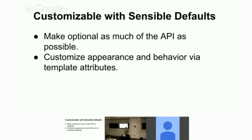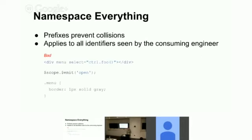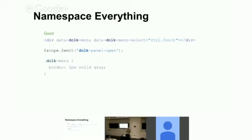Customize appearance and behavior via template attributes. Namespace everything — prefixes prevent collisions, and this applies to all identifiers seen by the consuming engineer. Here's a very bad example: a directive called 'menu' that emits an event called 'open' and has a CSS class called 'menu' — these things are all going to collide with other things. A much better approach is to prefix everything with the name of your application or namespace. I work on DoubleClick, so I used 'dclk' as a prefix. And an important note: don't use 'ng' as your prefix — only the Angular team gets to do that.